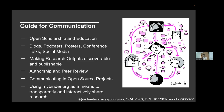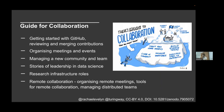The guide for communication covers topics related to effective communication in research. Chapters include open scholarship and education, how to use blogs, podcasts, and social media to promote your work, how to develop effective posters and conference talks, making research outputs discoverable and publishable, a chapter on authorship and peer review for those new to peer review, how to communicate in open source projects, and using Binder as a means to transparently and interactively share research — which Manuel will cover in a workshop tomorrow.